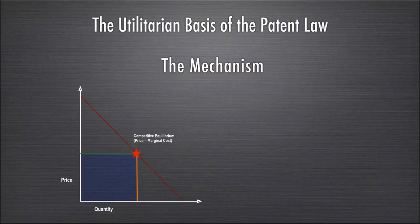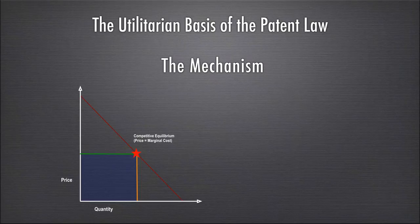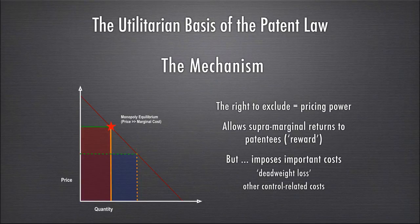In a purely competitive market, the price will equal the marginal cost of producing one extra item of that good — price and quantity will meet at the equilibrium point along the demand curve. With patents, however, because you have a right to exclude, the person who owns a patent has pricing power. They'll be able to raise the price above the marginal cost of producing the good, which reduces quantity. It gives more reward to the patentees but imposes important costs on society.